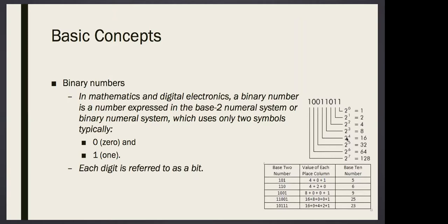How do you calculate this? Very basic: if you have 1001, it is one times two to the three, plus zero times two to the two, plus zero times two to the one, plus one times two to the zero, which is eight plus one equals nine. In time you'll get used to it.